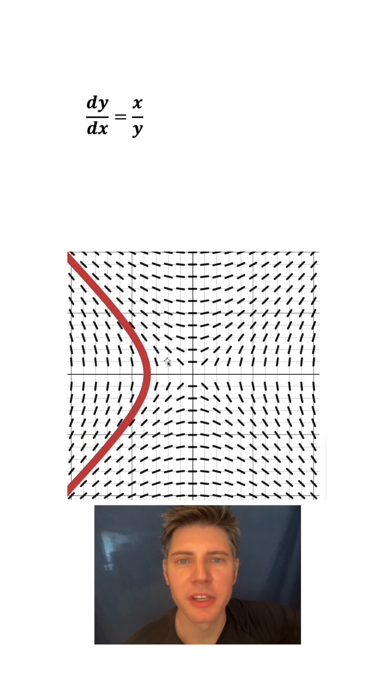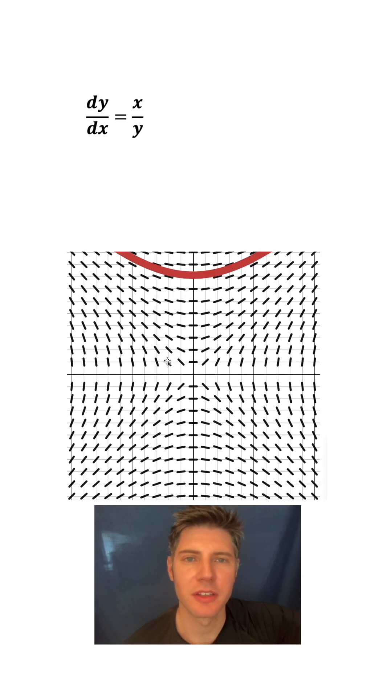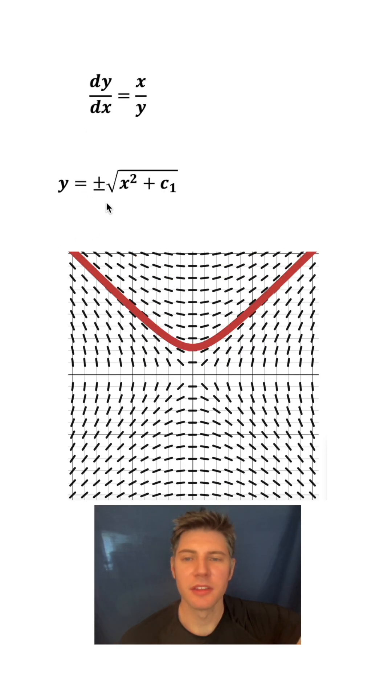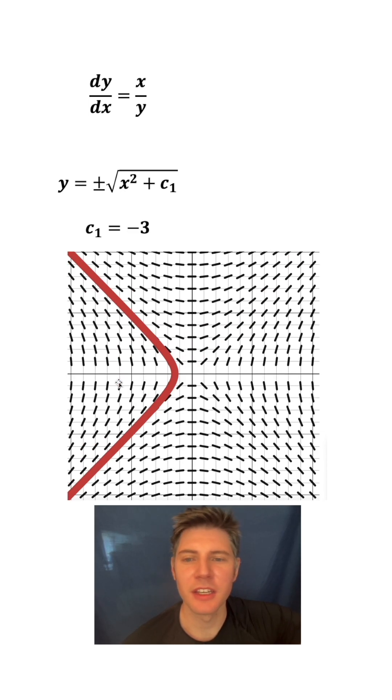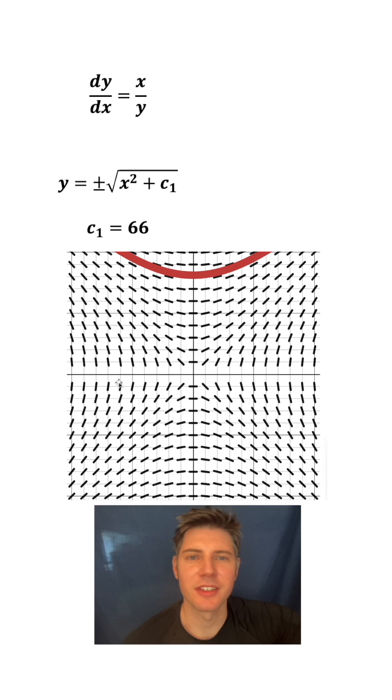There is an equation that describes all of these, and this is it right here. This is the solution to the differential equation. The c₁ here is a constant—it can change. In this particular case, the c₁ is equal to 5. Here, the c₁ is equal to -40, -15, -3, 35, 66, and all of these are solutions to this differential equation.